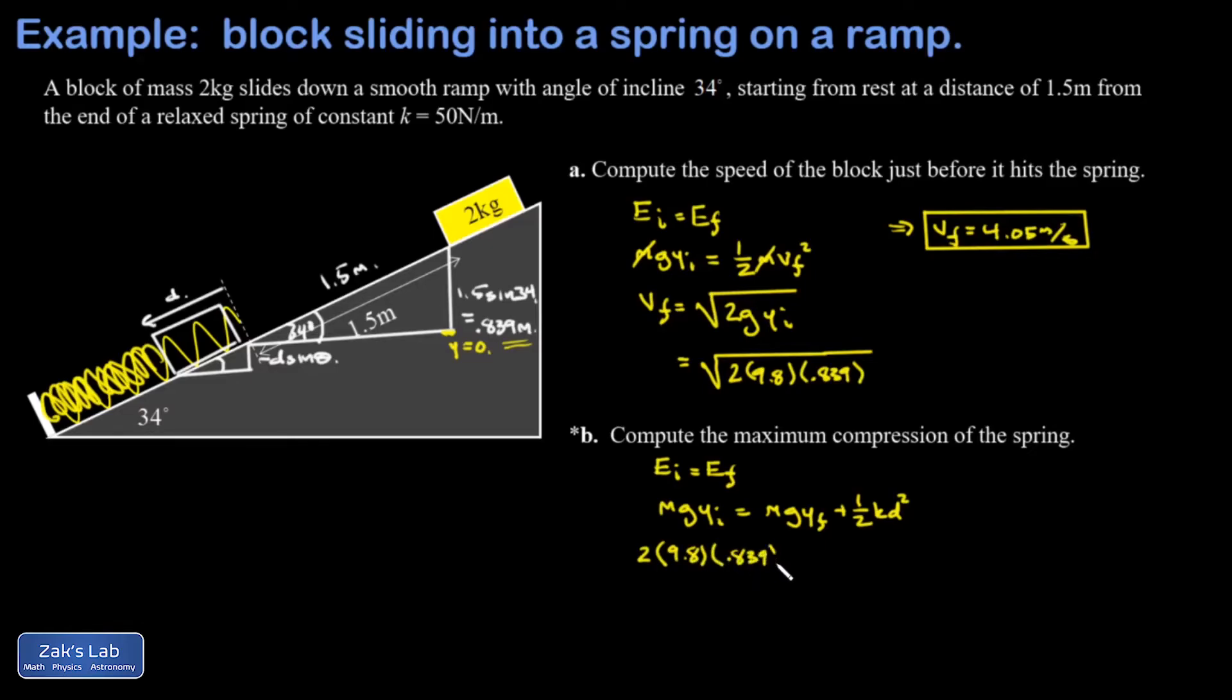My final gravitational potential energy term has a final y coordinate that must be a negative number because it's below the zero, so we took care of that here using a positive d with a minus sign out in front of it. And then finally we have our spring energy term and that's one half times k which is 50 in this problem times d squared.